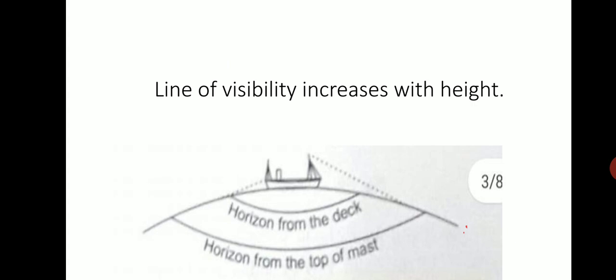Line of visibility increases with height. If you are standing near the beach or coastal area and a ship is coming from the opposite direction, you will not see the whole ship which is visible above the water. First, you will see the smoke or flag, then the lower portion, and then the bottom portion. Why? Because of the curved surface of the Earth.